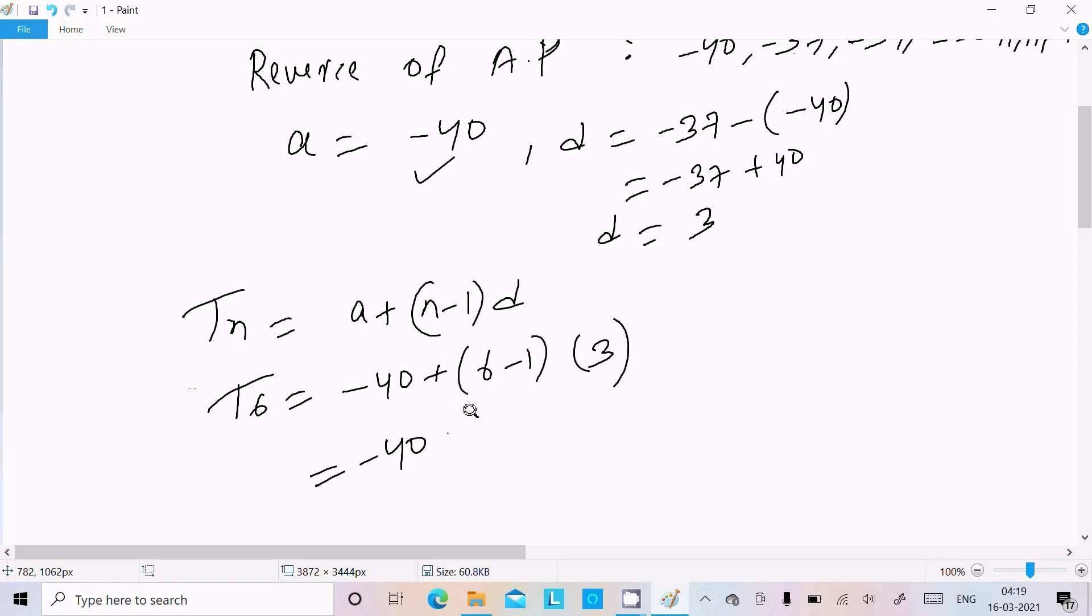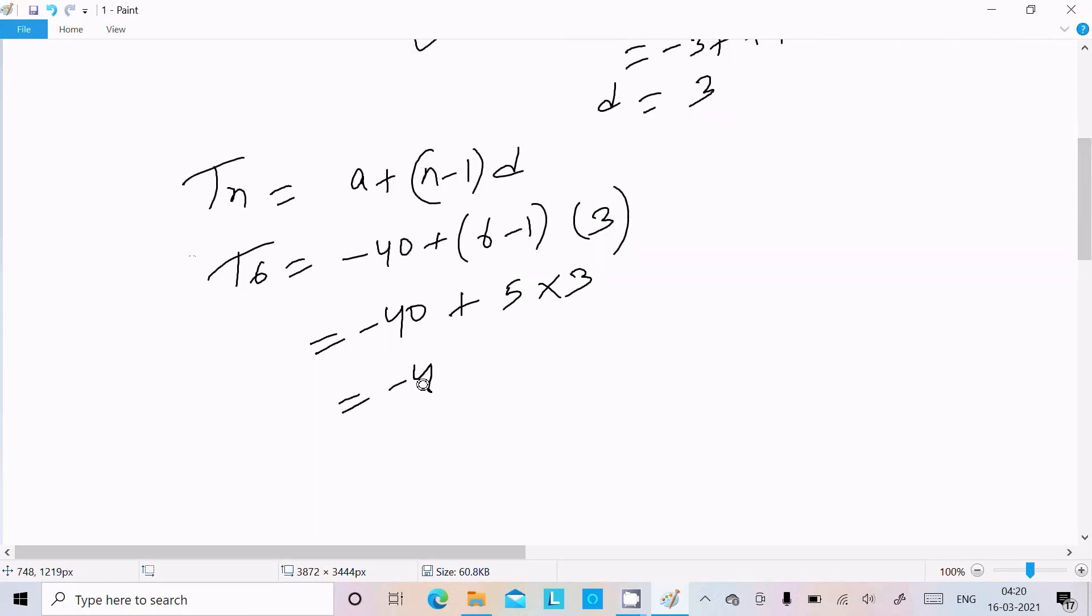Now here minus 40, 6 minus 1 that is 5, here 3. Now minus 40 plus 15, so here T6 is now minus 25.